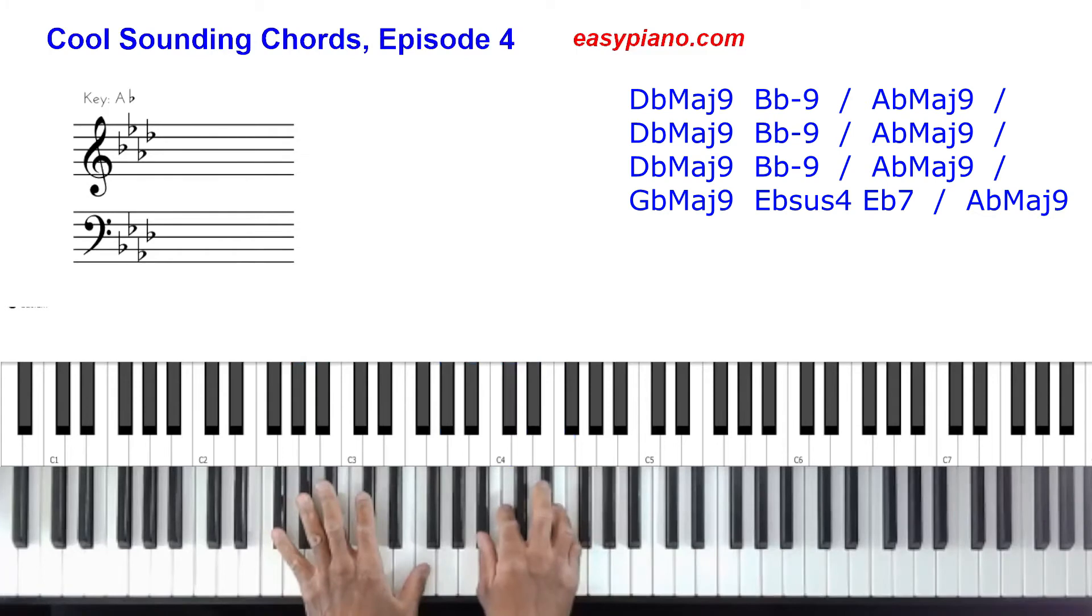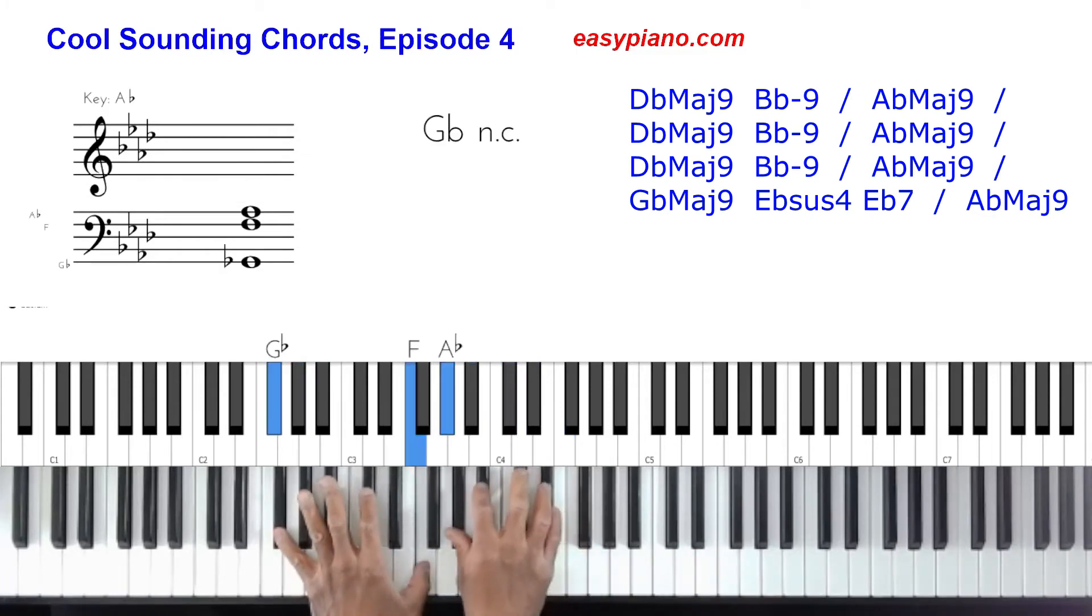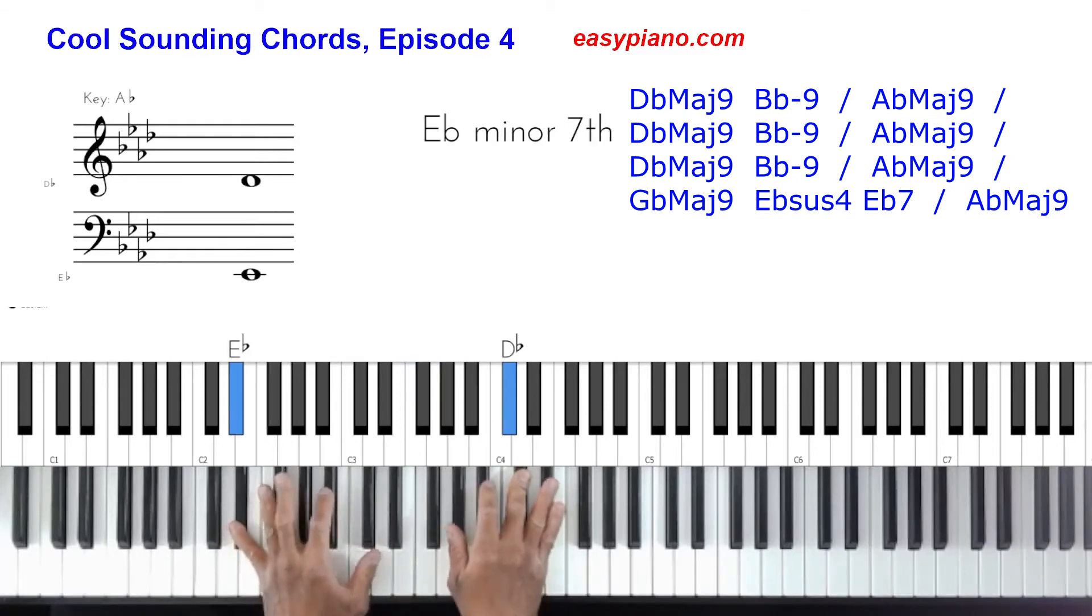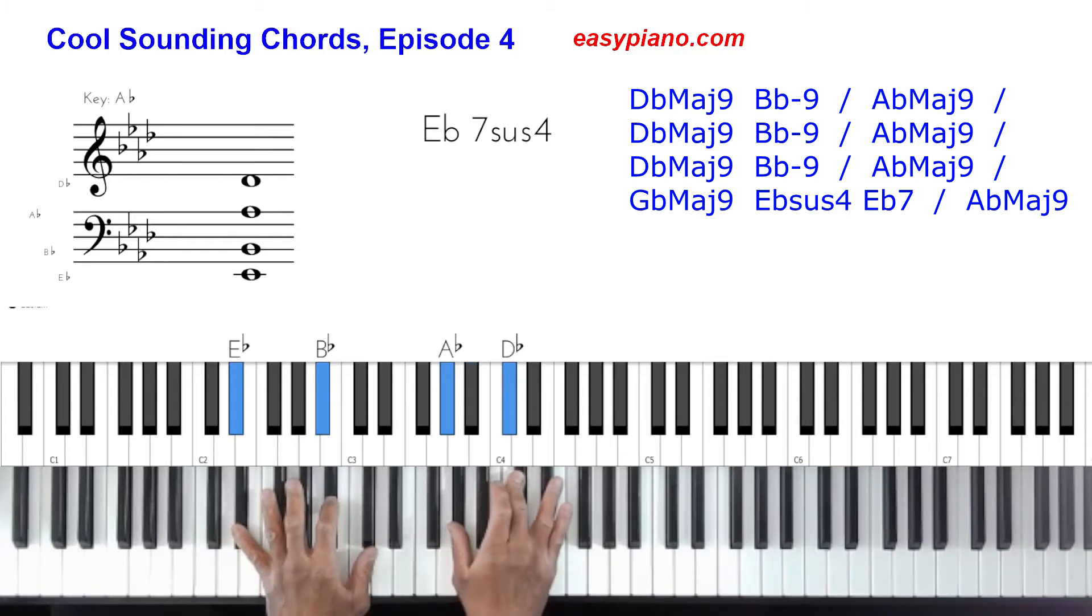Voicing: one, seven, nine, three, five. After this, we're going to play an E flat sus four chord. Voicing: one, five, four, flat seven. And then we're going to go to an E flat dominant seventh chord. All that it involves is just dropping this note here, the A flat, down to the G.